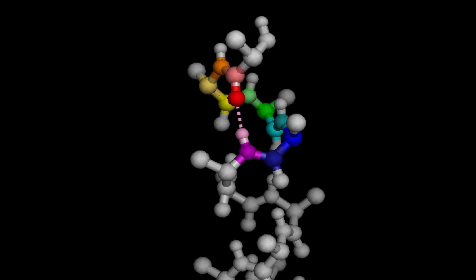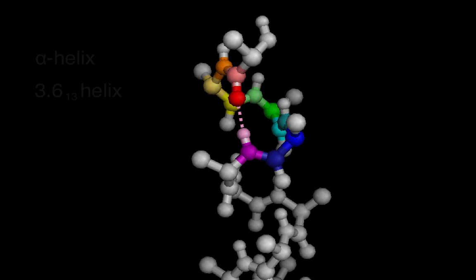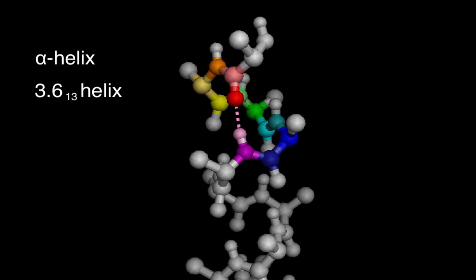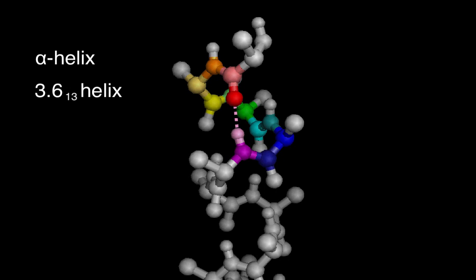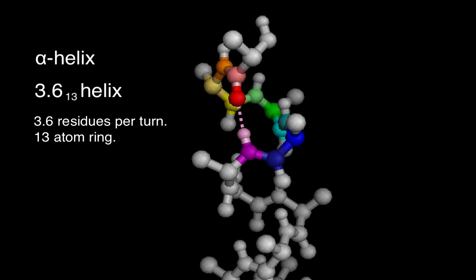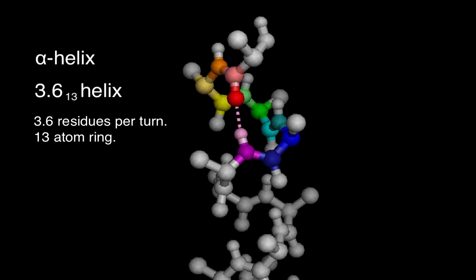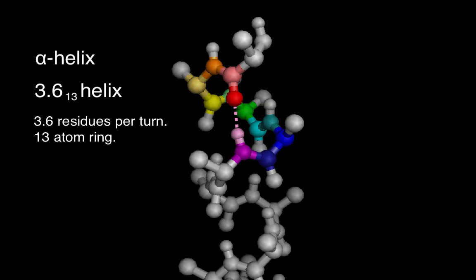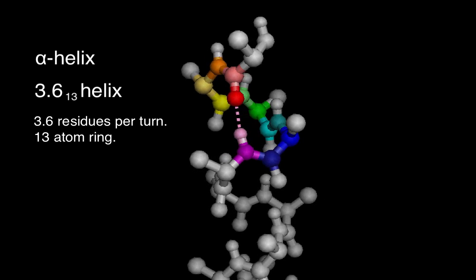In fact, the formal name of the alpha helix, 3.6₁₃ helix, includes this concept. The helix is 3.6 because that's the number of residues it takes to complete one helical rotation, and it's 13 because the hydrogen bond enables the formation of a thirteen-membered ring.